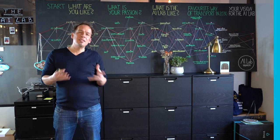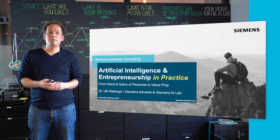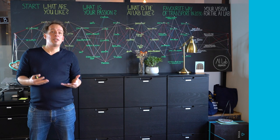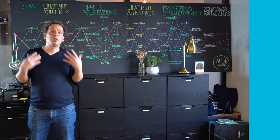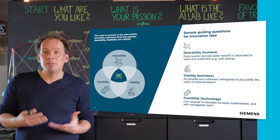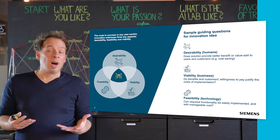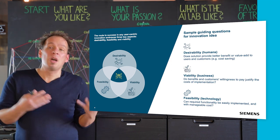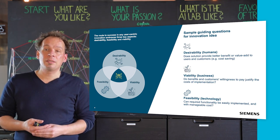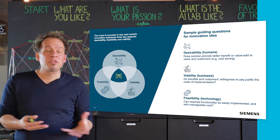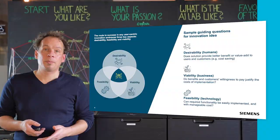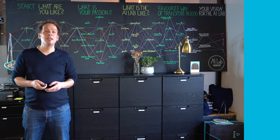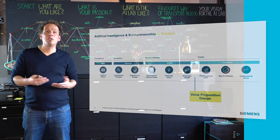Welcome to AI in Practice. This time we want to focus on pains and gains of personas and value proposition design. Our main logic and imperative in designing digital offerings embraces three key aspects: desirability, feasibility, and viability. Viability means do the benefits and customers' willingness to pay justify the cost of implementation. Desirability asks whether the solution provides better value, benefits, and cost savings. Feasibility asks whether the required functionality can actually be implemented at manageable cost. One approach to define value propositions across these three dimensions is called value proposition design.